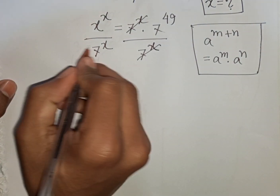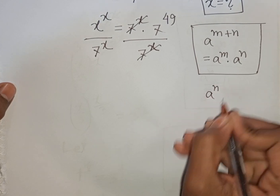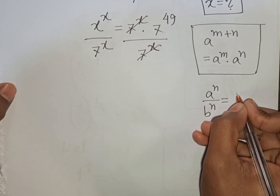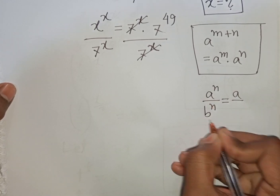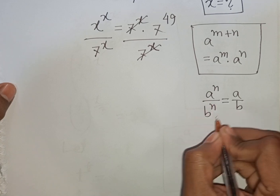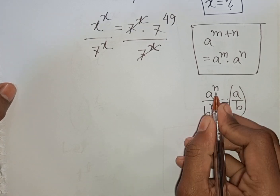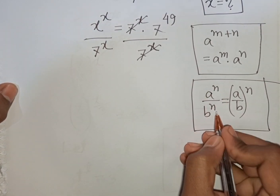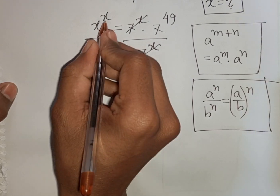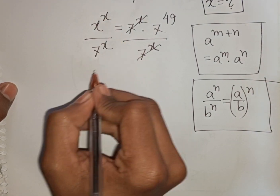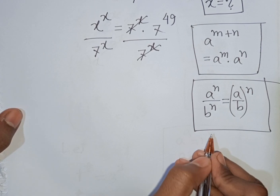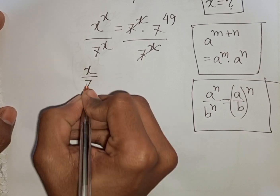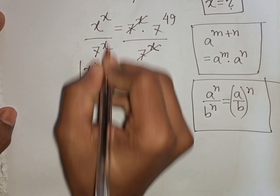Here we can apply the formula a^n times b^n = (a times b)^n — same power but different base. Here x and 7 have the same power x but different bases, so according to this formula we write (x/7)^x.